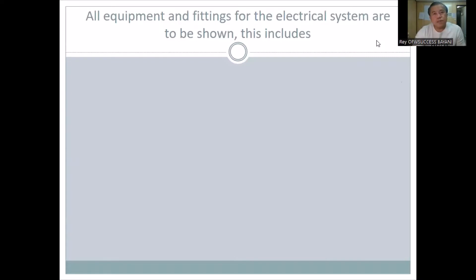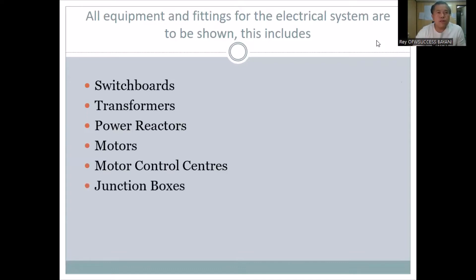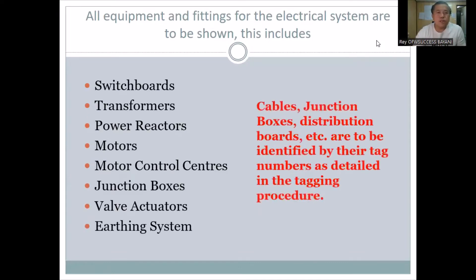All equipment and fittings for the electrical systems are to be shown. This includes switchboard, transformer, power reactor, motors, motor control center, junction box, valve actuator, cable junction box, distribution board, etc. All of these are to be identified by their tag number.